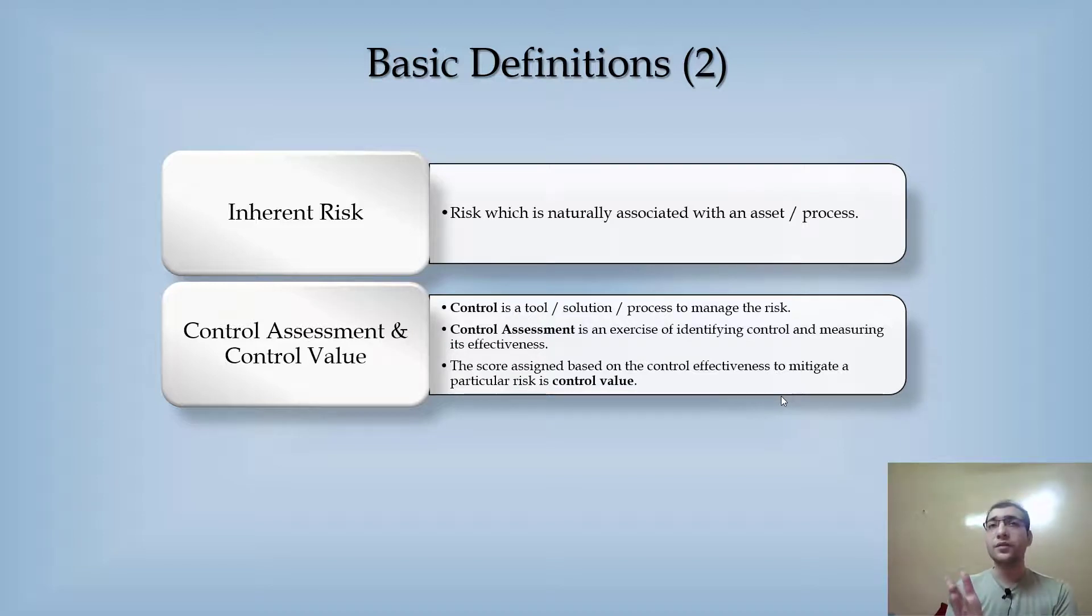When you do that, you have a matrix based on which you assign a value to that control. That particular matrix has its own values; for instance, sufficient, not sufficient, or absent. We have these values in qualitative terms that we can assign to the particular control, and this whole process is called control assessment.